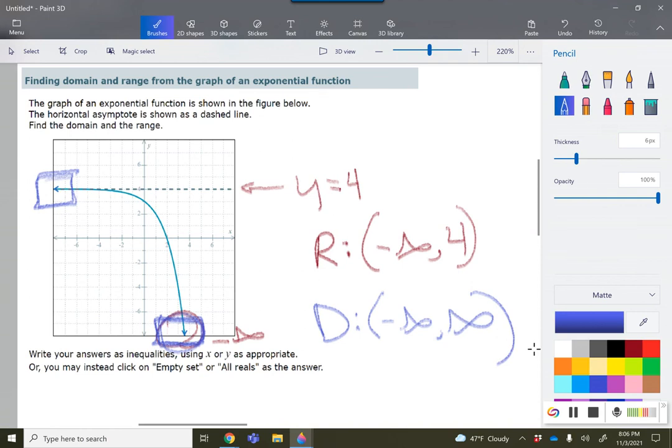Now as I look at these directions, it says write your answers as inequalities using x or y as appropriate. That means they don't want the intervals, so instead of the range being from negative infinity to 4, we can say y is less than 4 because it's range.